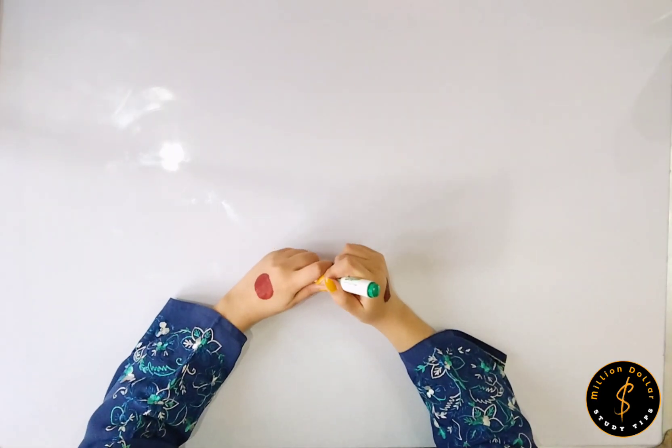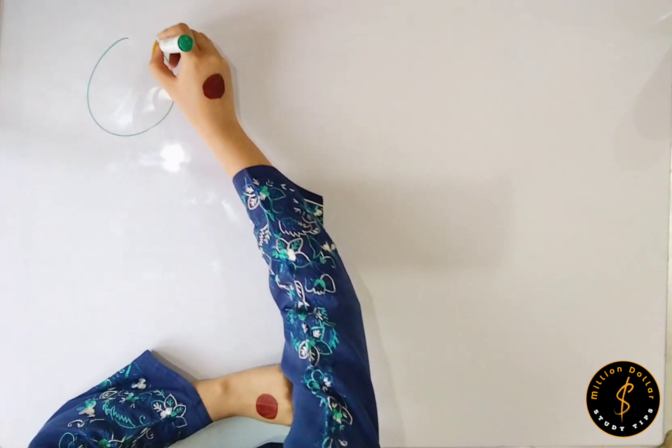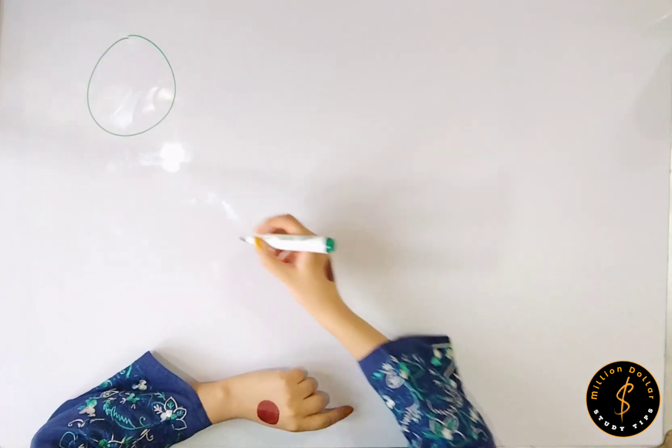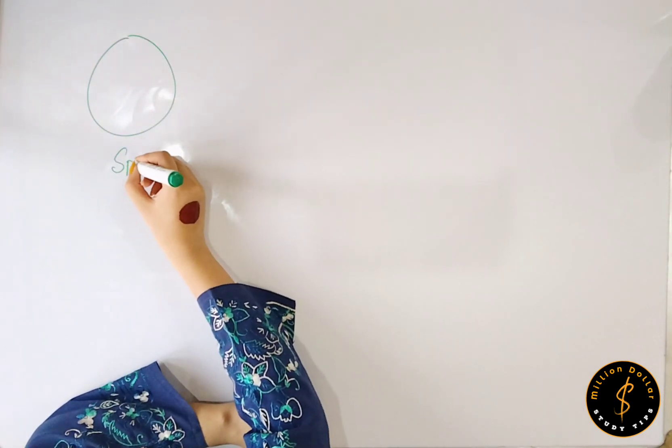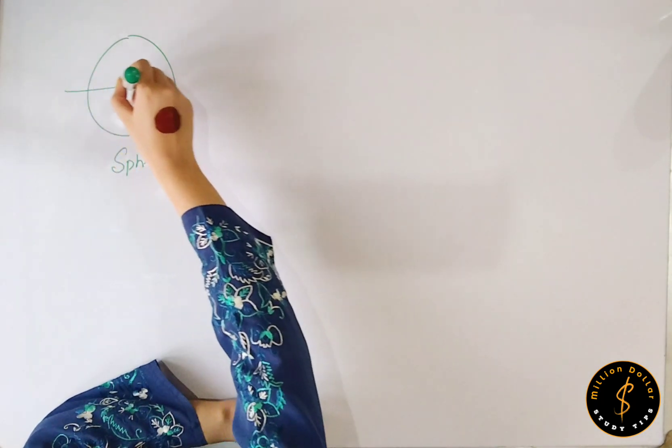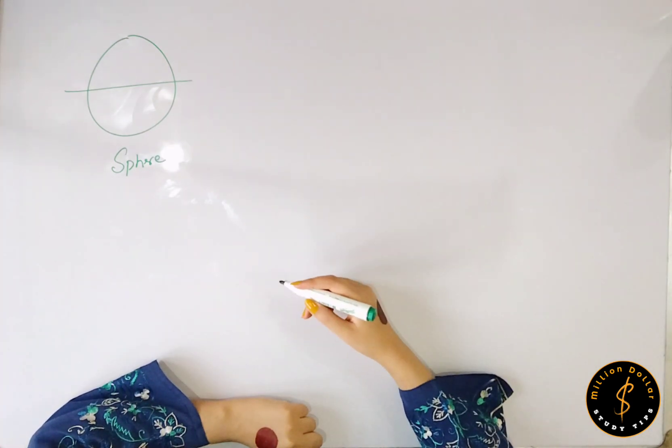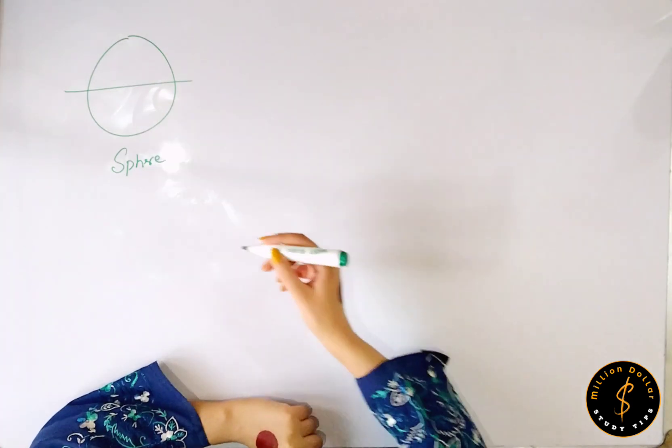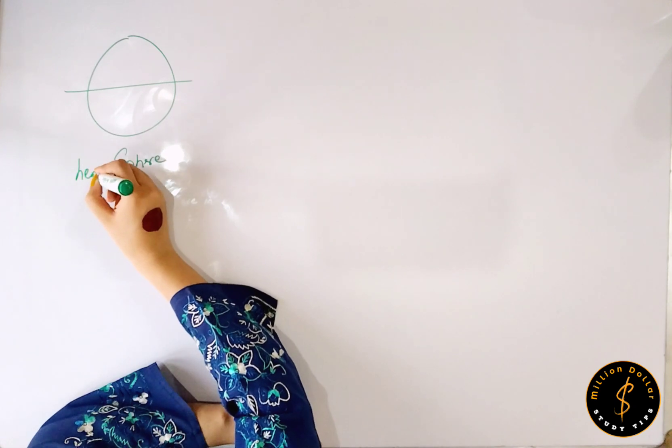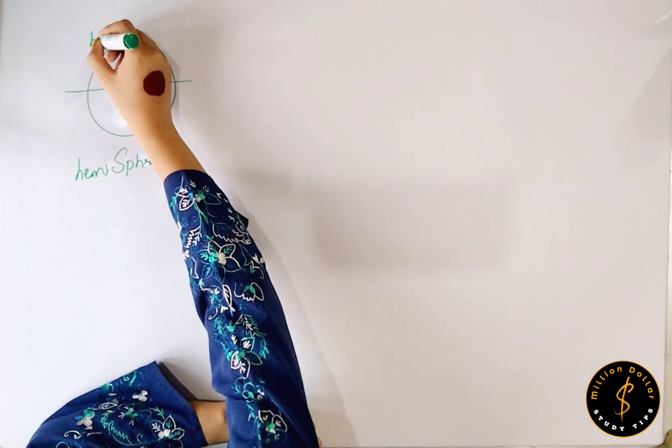Bismillahirrahmanirrahim, assalamualaikum. So this is a sphere. If we cut this sphere or divide this sphere, then what will happen? It will become two hemispheres.